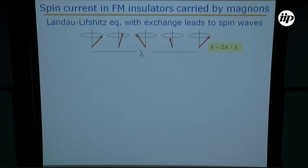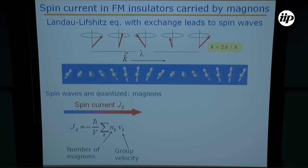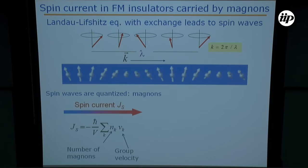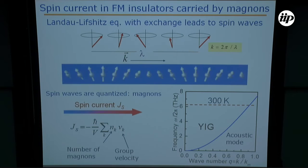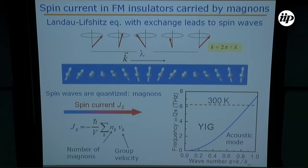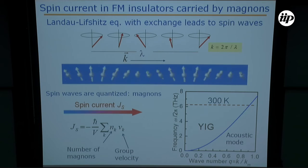How do we have spin current in YIG? As was shown yesterday, spin waves carry angular momentum and therefore carry spin current. The spin current is formally given by the number of magnons times the sum over the Brillouin zone of the number of magnons times the group velocity. In yttrium iron garnet, I'm showing only the acoustic mode — the optical modes are very complicated. YIG has a nearly parabolic dispersion with frequency ranging up to several terahertz.